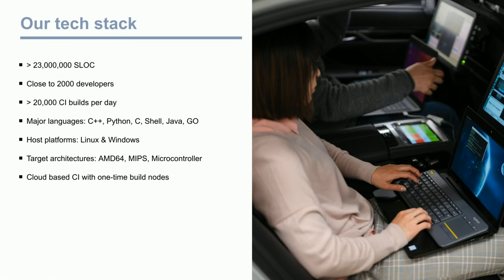Our host system is mostly Linux nowadays, but for some corner cases Windows is still needed, even on the CI. The software is not deployed to Linux or Windows and shipped to the customer, but to a very special hardware with a special operating system built into the cars at the factory. This hardware uses completely different architectures — AMD64, MIPS. We also set up a new CI system hosted on our on-premise cloud.